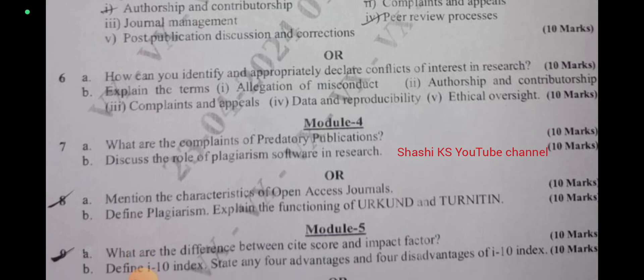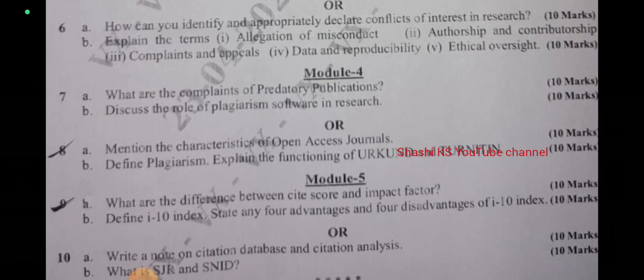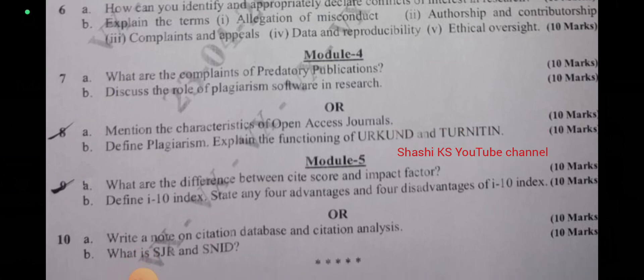In Module 5, question 9a: what are the differences between CiteScore and impact factor — asked for 10 marks. Question 9b: define i10-index, state four advantages and four disadvantages of the i10-index — asked for 10 marks. The or-choice, question 10a: write a note on citation database and citation analysis — asked for 10 marks. Question 10b: what is SJR and SNIP — asked for 10 marks.